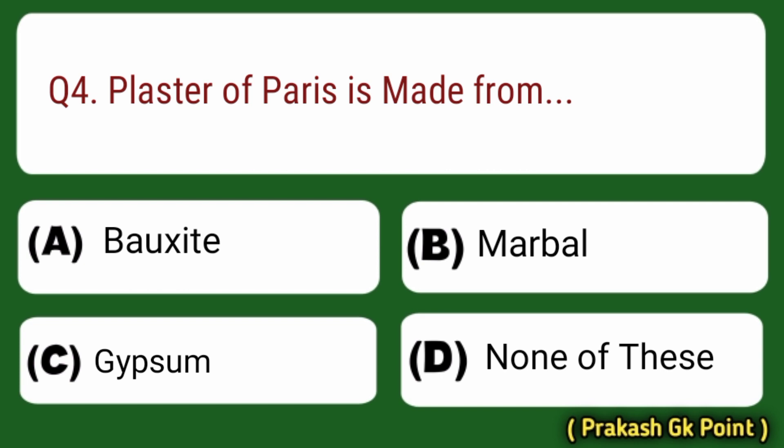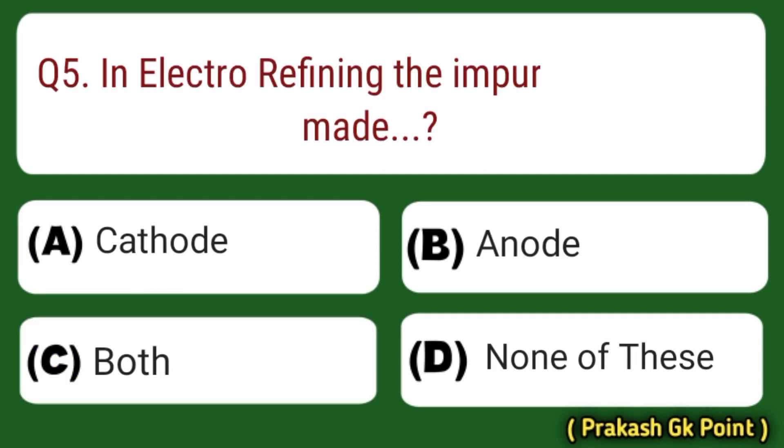Next question: plaster of Paris is made from? Answer: Option C — Gypsum.